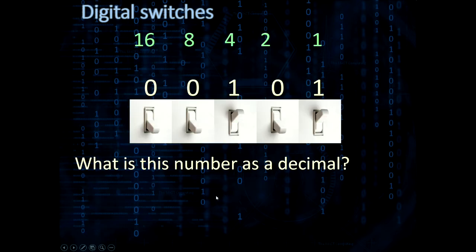So what would that number be as a decimal? We'd go through these. Easy sometimes to think of them like coins. We've got one four-pound coin, we've got one one-pound coin. What have we got? Five pounds. So five is this number.